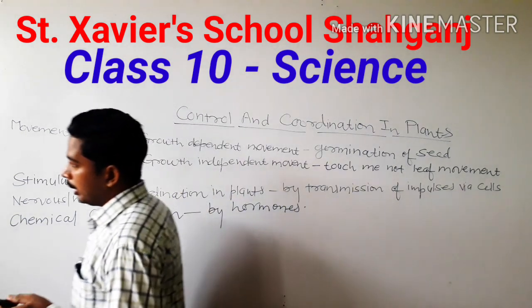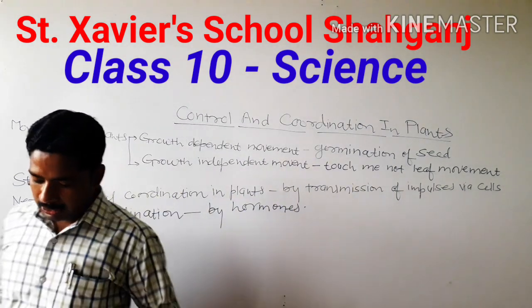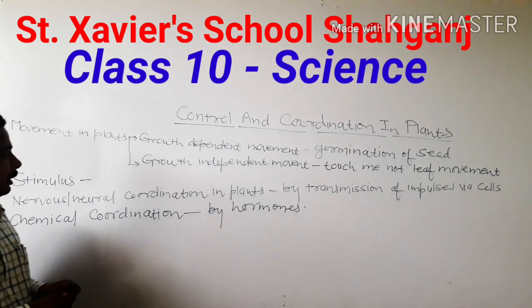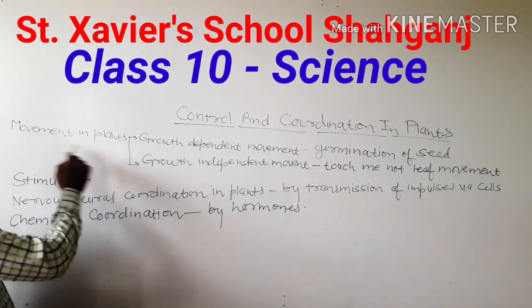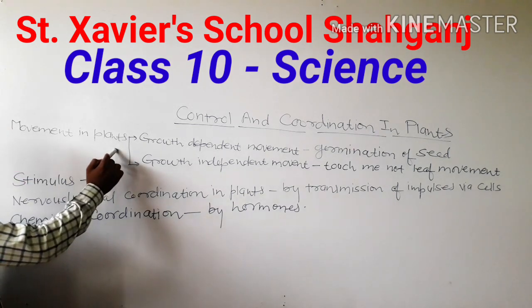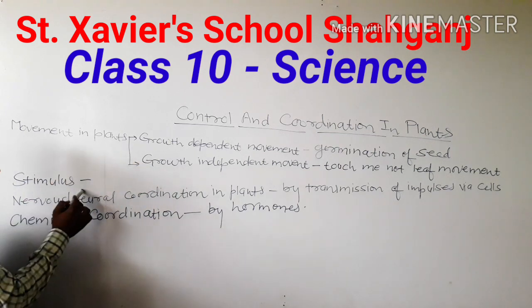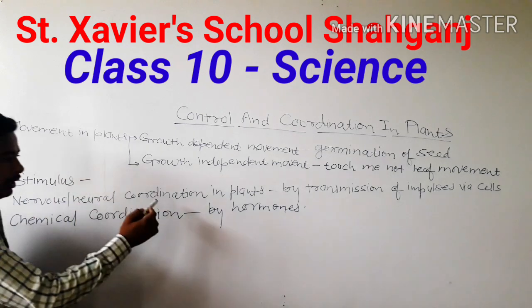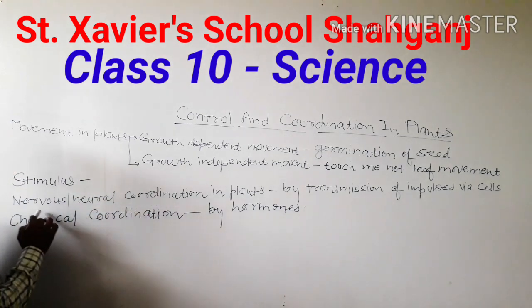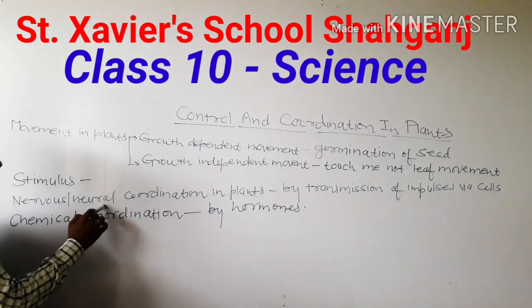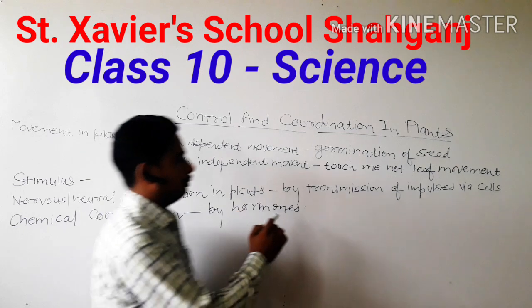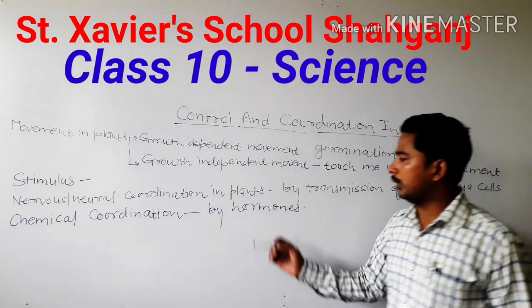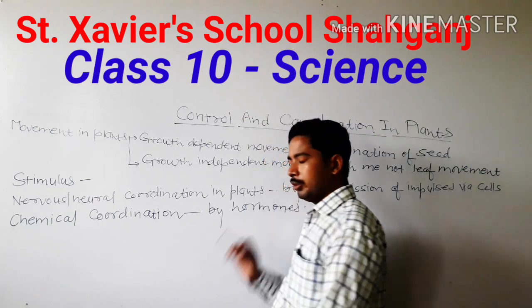In control and coordination of plants, we will study under the following heads. First, movement in plants. Second, stimulus. Third, types of coordination in plants — that is neural or nervous coordination, which is by electrical impulses, and chemical coordination, which is with the help of hormones.